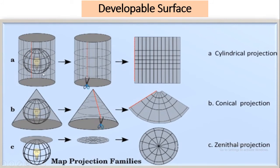A developable surface is the shape within which the globe is placed. When the globe is placed within a cylinder, that projection is called cylindrical projection. When the globe is placed within a cone, it is called conical projection, and the cone can then be unrolled. There is also the zenithal group of projections, where the projection plane is kept at the zenith or top — in that case the projection always looks like a circular shape.